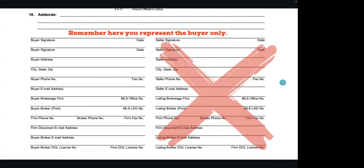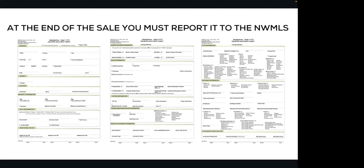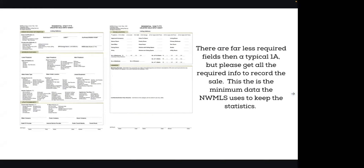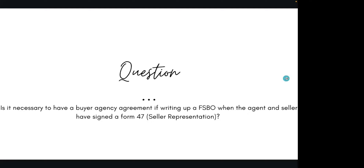At the end of the sale, all sales need to be reported to the Northwest MLS. They keep data on all of the closings and will record all off-market and on-market sales. There are several required boxes — far less than what's on a standard listing agreement — but do your best to fill out as many as possible. They keep this data for statistics and it helps with price comparisons and appraisals. These are actually required at the end of the sale to be recorded with the Northwest MLS — that's the 1ULS, the unlisted listing input sheet.